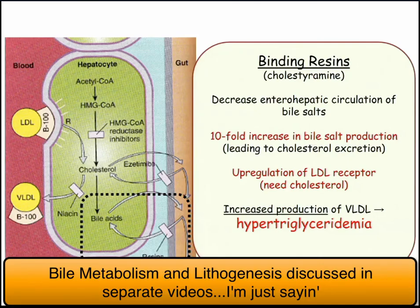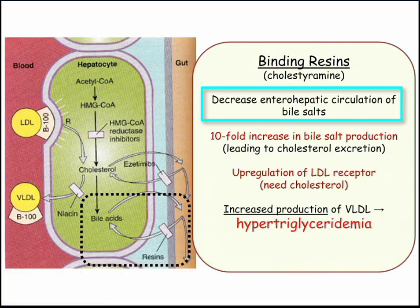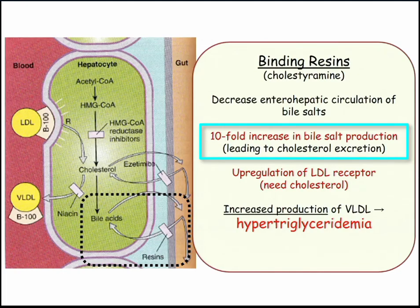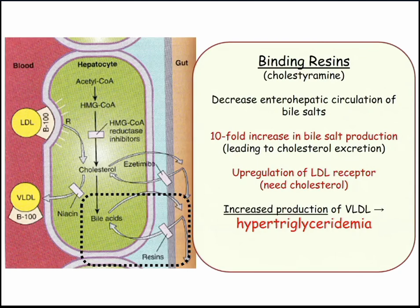Cholestyramine — binding resins. They bind bile salts in the intestines so they're not getting reabsorbed. If they're not getting reabsorbed, the liver has to crank up to make fresh new bile salts. If it's going to make bile salts, and bile acids come from cholesterol, then the liver is going to upregulate its LDL receptor — 'I need cholesterol to make more bile because it's all going out in the toilet.' That's the mechanism by which cholestyramine lowers LDL. The LDL uptake is a result of interfering with the enterohepatic circulation.